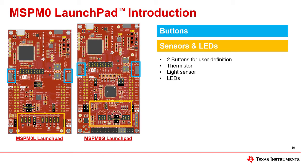On each side of the Launchpad there are user-definable buttons. On the lower portion of the device are a temperature sensor, a light sensor, a single color LED, and an RGB LED.